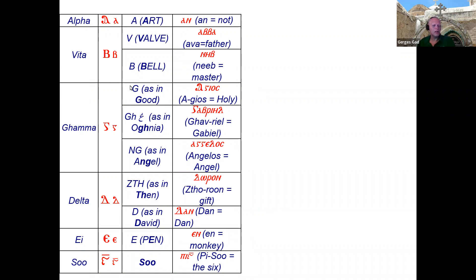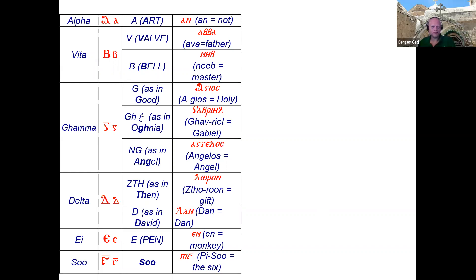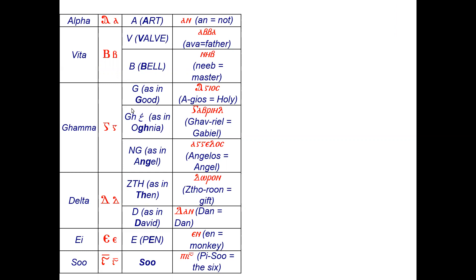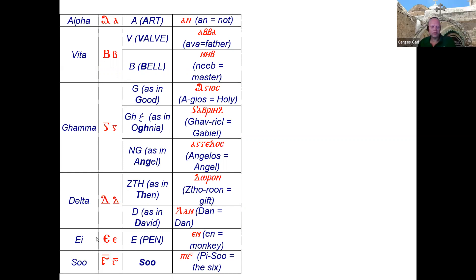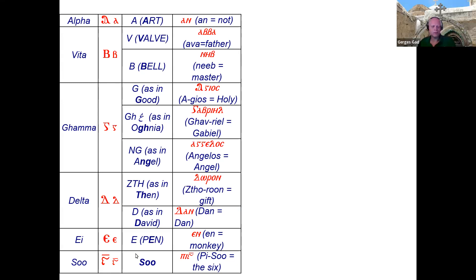First we have Thomas. Just tell us the letter and its pronunciation — like 'Alpha, A; Vita, V, B' — like that. Thomas reads: Alpha, A; Vita, V, O, B; Gamma, G, V, N; Delta, Th, U, Da; and then E and Su. The teacher corrects: this letter is called 'E,' not 'I' — it's just like the English E. So E is E, and Su is Su.